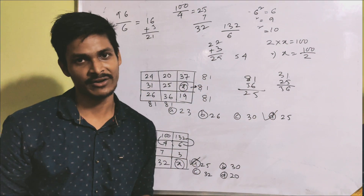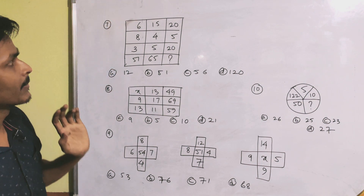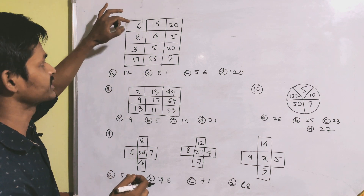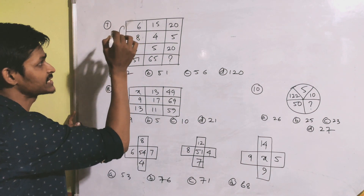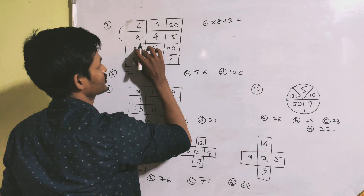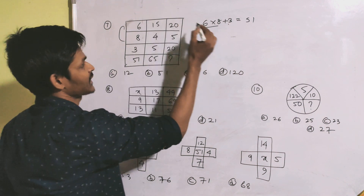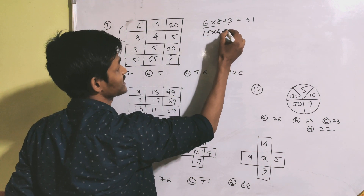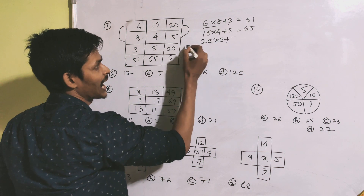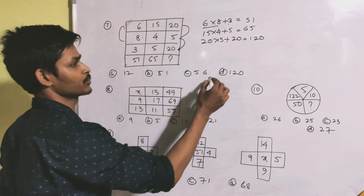So the answer option A is 25. Then: 6, 15, 20, 8, 14. We have the same column of 5. Six eights are 48, or three gives 51. Multiply by 3 for 35. Fifteen into 4 is 60 plus 5 giving 65. Twenty into 5 is 100, plus 20 giving 120. Option deal gives 120.